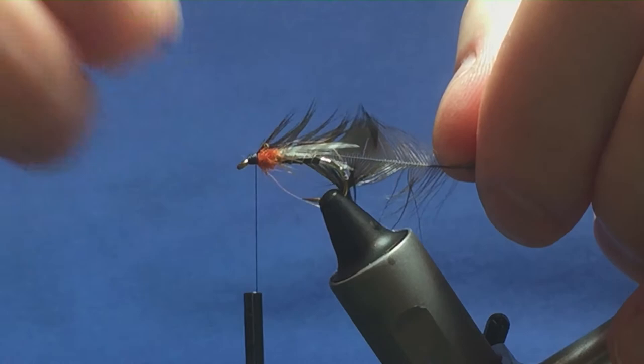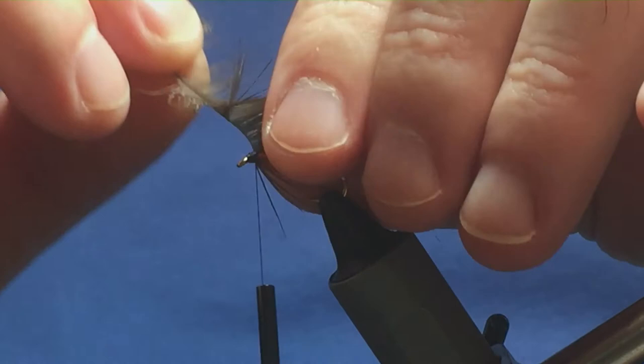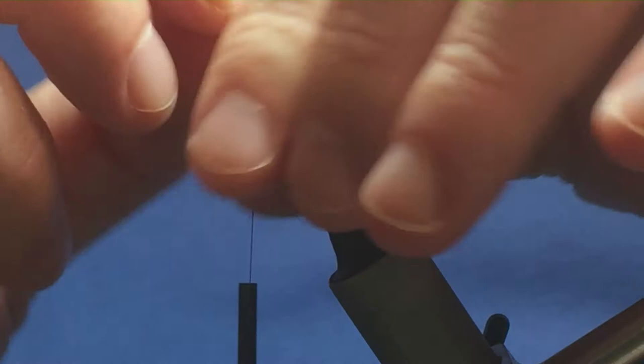Now the turns at the front, it's entirely up to yourself how heavy you like your flies dressed. I'm only going to put in two turns. That'll do me. So just two turns of the hen hackle at the front.